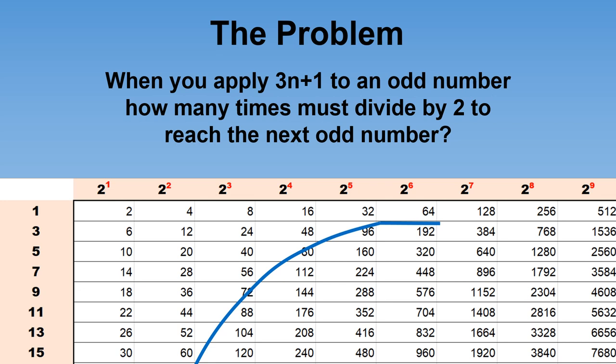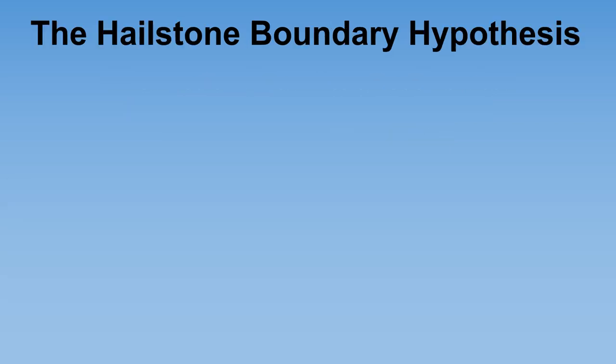In fact, all the even numbers in that column can be divided the same number of times to reach an odd number. 960 is a large number, but dividing by 2 just 6 times gets us to 15. Turns out it works well — very well.